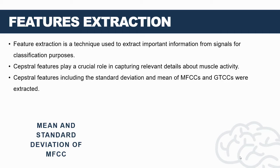Let's discuss the feature extraction stage. Feature extraction is a fundamental technique used to extract essential information from signals, particularly for classification. In our research, we place particular emphasis on spectral features, as they play a critical role in capturing details about muscle activity. Features including the standard deviation and mean of Mel-Frequency Cepstral Coefficients (MFCCs) and Gammatone Cepstral Coefficients (GTCCs) were extracted from EMG signals. These features are instrumental in characterizing and quantifying distinct aspects of muscle activity.